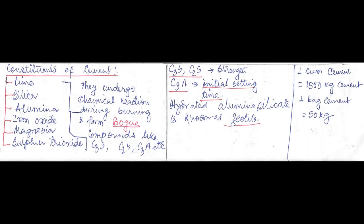Now I will discuss the constituents of cement. Main constituents are lime, silica, and alumina. Then there are also iron oxide, magnesia, and sulfur trioxide. What happens during burning,